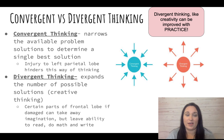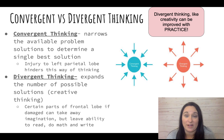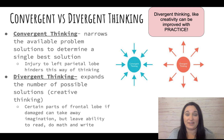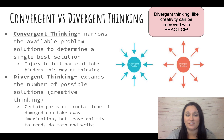Divergent thinking would be the opposite, where there's one problem and you come up with multiple solutions. So for example, how many things can you do with a brick? If I gave you a couple minutes and you write all those things out, now you're using divergent thinking, which is creative thinking, because you're coming up with multiple different solutions.